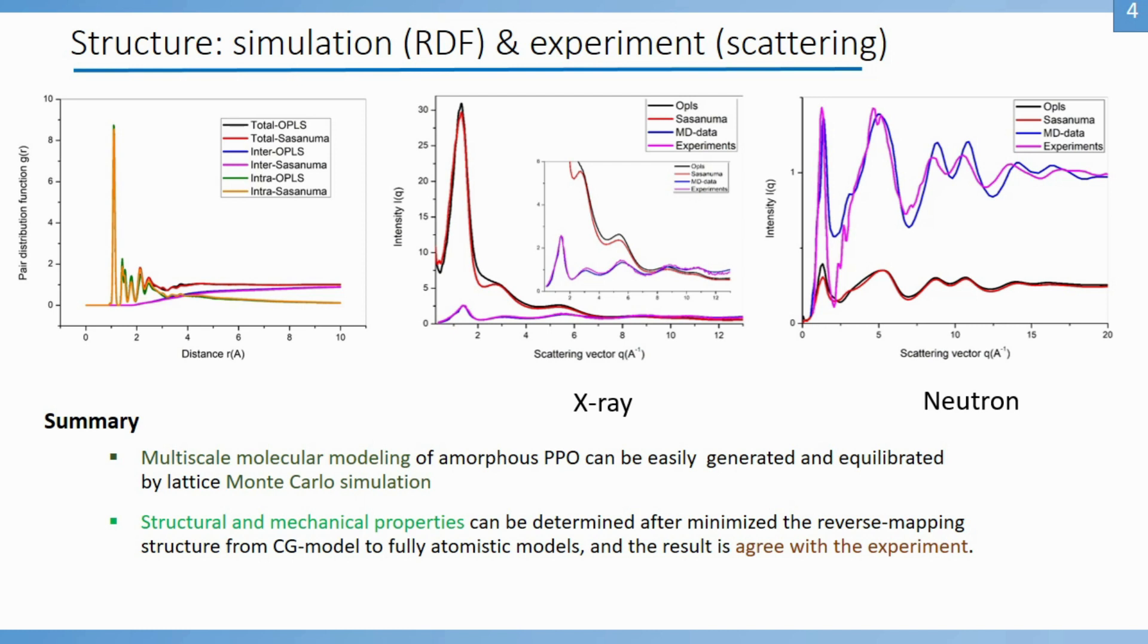For neutron scattering, the calculated profiles exhibit good agreement for all peaks except the first sharp diffraction peak due to oxygen-oxygen, hydrogen-hydrogen, and oxygen-hydrogen correlation.